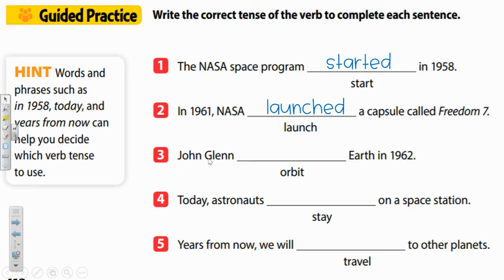Number three: John Glenn blank earth in 1962. Same as the first two, 1962 already happened in the past. So how do we take the verb orbit and make it past tense? John Glenn orbited earth in 1962.